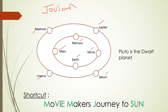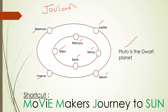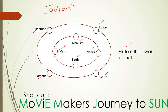Pluto is the dwarf planet. The shortcut to remember these eight planets is 'Movie Makers Journey To Sun.' M for Mercury, V for Venus, E for Earth, M in Makers for Mars — these four are the inner planets. J in Journey for Jupiter, S for Saturn, U for Uranus and N for Neptune — these are the outer planets.